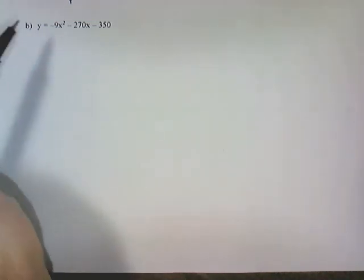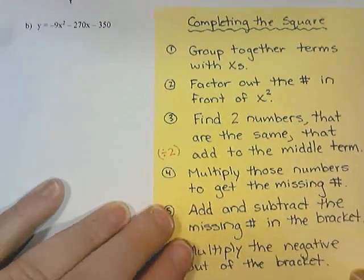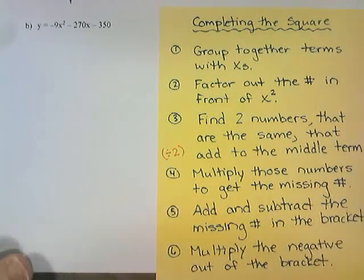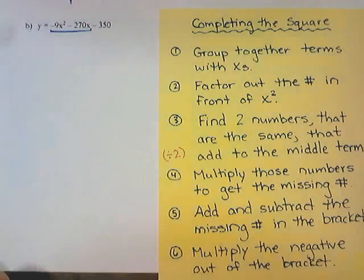Welcome back grade 11s. This is part two of our lesson on completing the square where the number in front of x squared is negative. We're going to follow our steps and see if we can complete the square on this one. Our first step is to group together all of our terms that have an x. So that would be the negative 9x squared and the negative 270x.